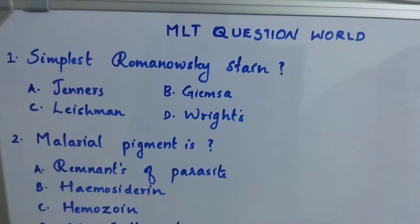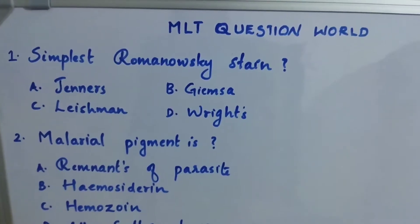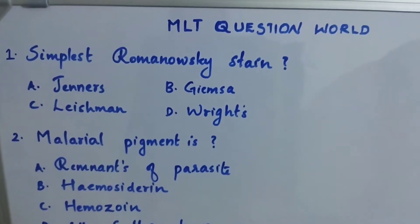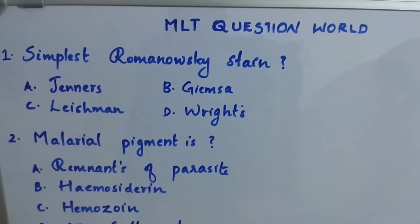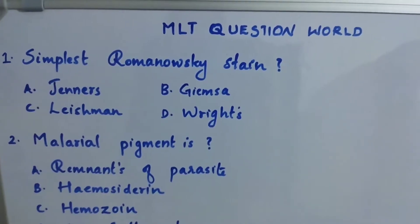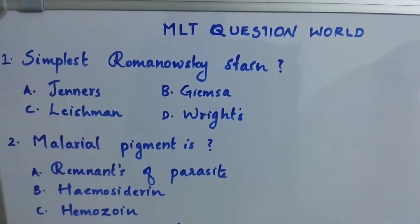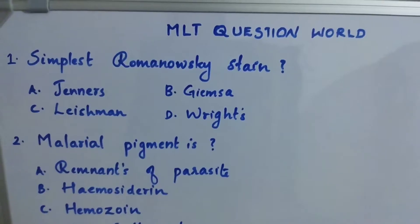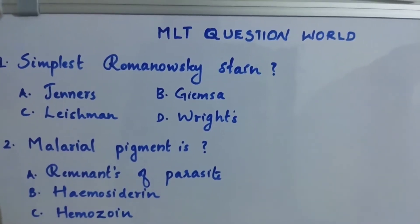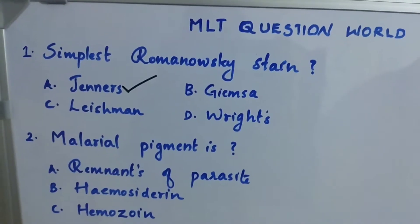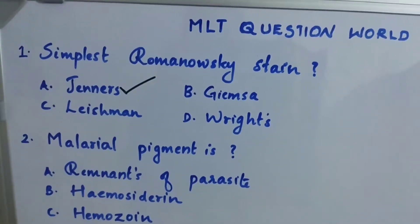Hello friends, welcome back to Melody Question World. Question number 1: What is the simplest Romanovski stain? Option A: Jenners. Option B: Jeansah. Option C: Leishman. Option D: Rights. The right answer is Option A, Jenners.